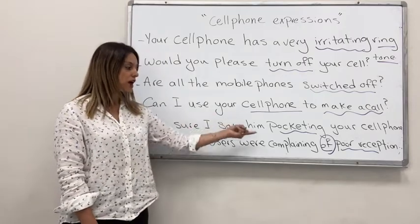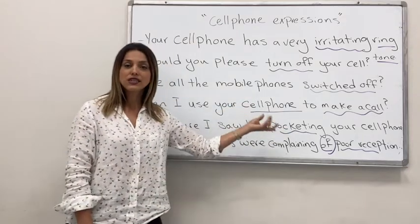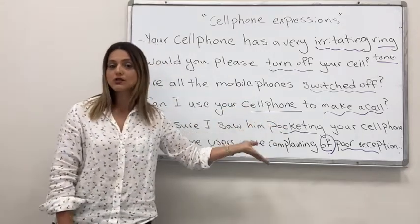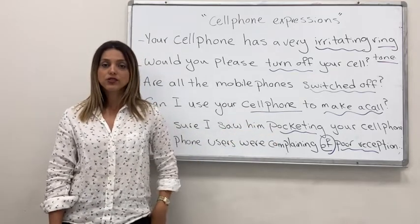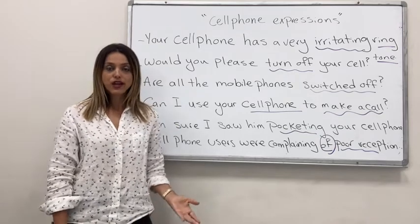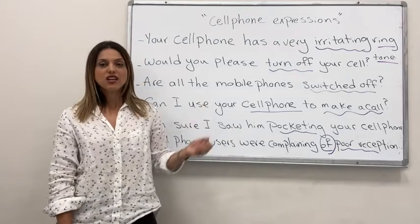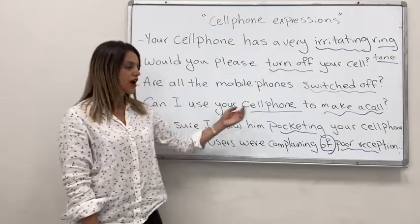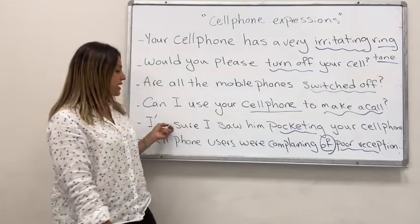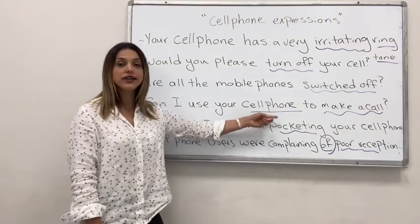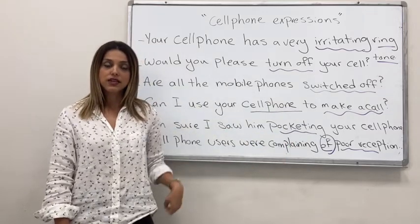Next sentence: 'I'm sure I saw him pocketing your cell phone.' Look at that — 'pocket' is a noun, but here it's used as a verb. 'Pocketing' means to put something in your pocket. Think of a thief — like a pickpocket — who sees something they want, grabs it, and puts it in their pocket or bag and steals it. So you can say: 'I'm sure I saw him pocketing your cell phone,' meaning he took it and put it in his pocket.